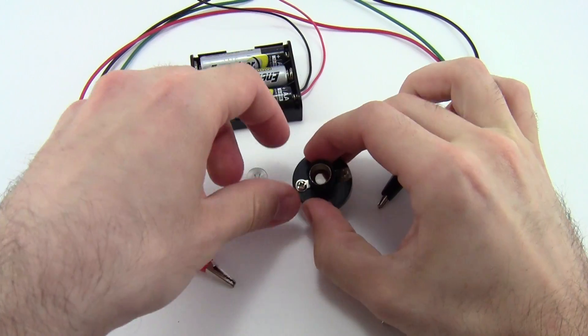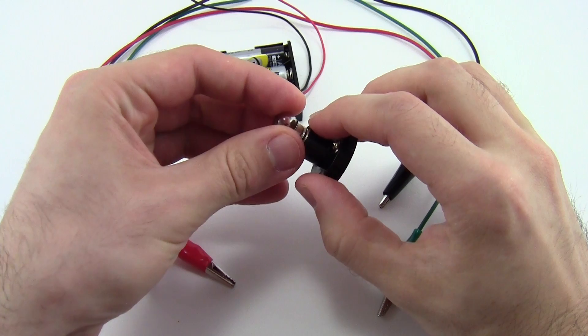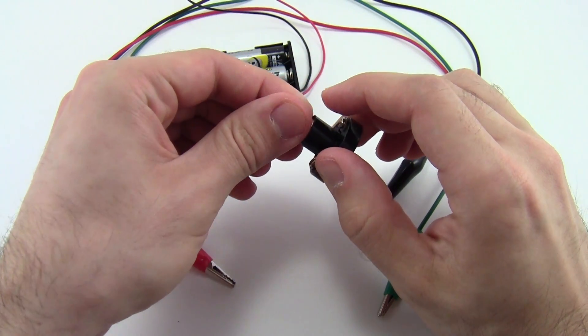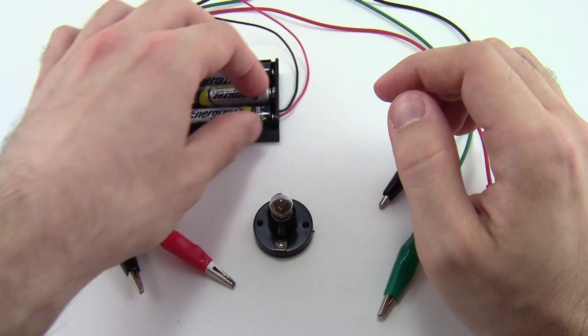Next, just screw the light bulb into the base, and now you are ready to connect everything with the alligator clips.